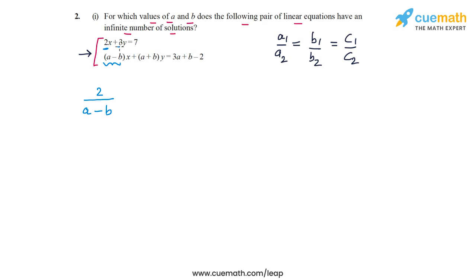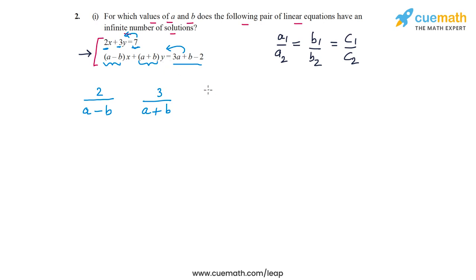Then B1 by B2: B1 is 3 from the first equation and (A plus B) is B2 in the second equation, so we have 3 by (A plus B) as the ratio of the coefficients of y. For the constant terms, both are written on the right side, so we can take their ratio directly as C1 by C2, which is 7 by (3A plus B minus 2).